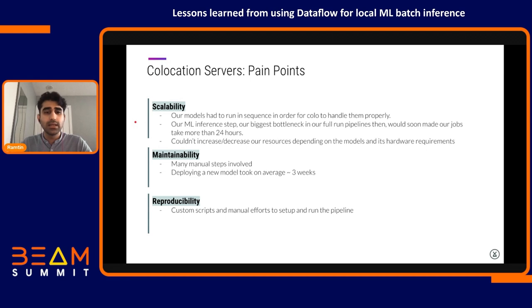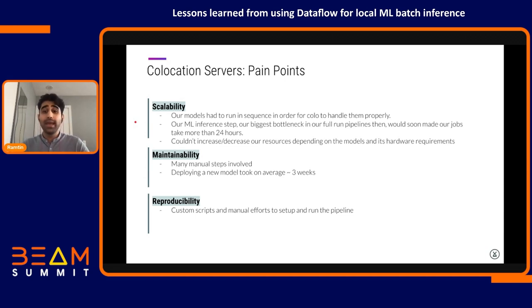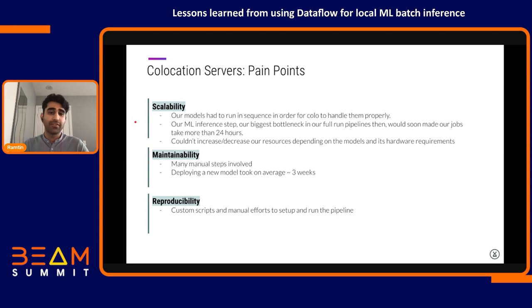With respect to scalability, we are now working with hundreds of millions of data rows — terabytes of data — and we couldn't run models in parallel on our colocation servers without constantly expanding that infrastructure. We also couldn't change hardware configuration or upscale and downscale the service depending on model requirements. Eventually, the inference service became the bottleneck of our pipeline, and it would have made our end-to-end runs take more than 24 hours. Additionally, colo has a lot of maintenance overhead, and it took significant ML engineer time just to keep colo up and ready. Sometimes after deployment, we had to debug non-ML-related issues for weeks before the model was ready for production.